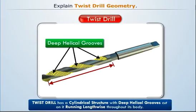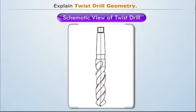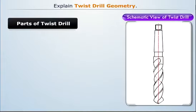Now let's study the geometry of the twist drill in schematic view. Twist drill consists of two main parts: shank and body.